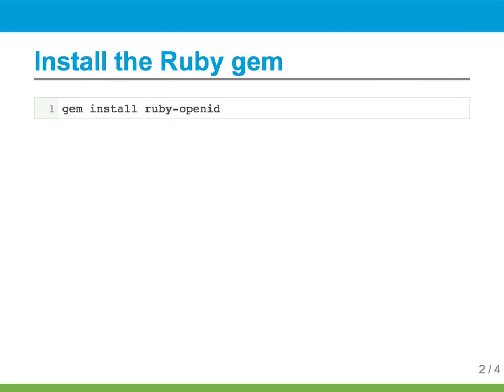The first thing you need to do is to install the Ruby OpenID gem. This gem is used to process the OpenID logins for Redmine. Make sure you get at least version 2.0 of the gem — there's a 1.0 version that will not work and you'll get some funky errors.